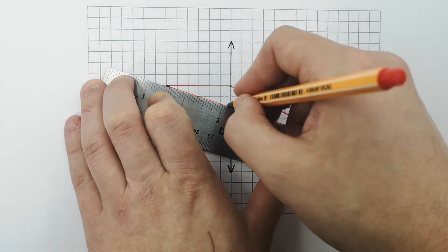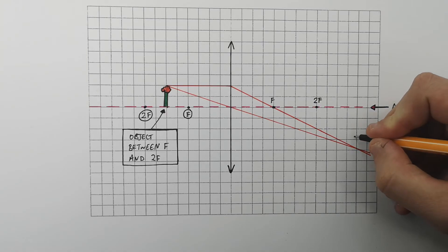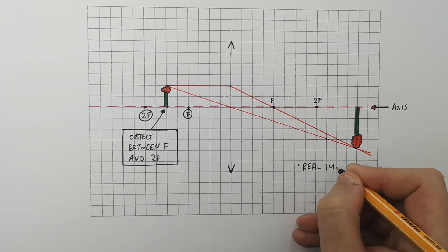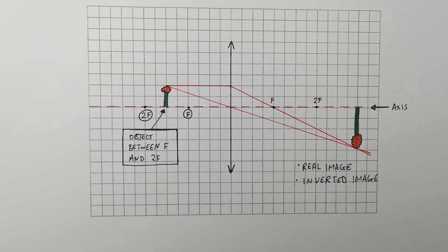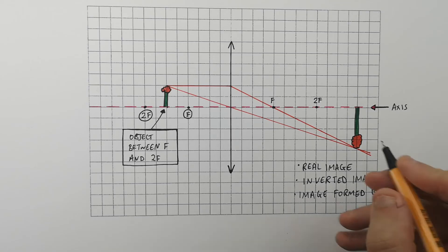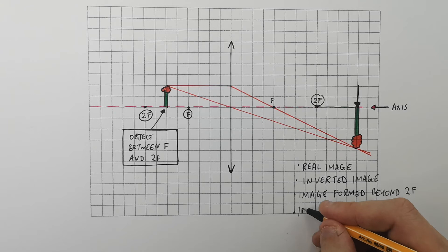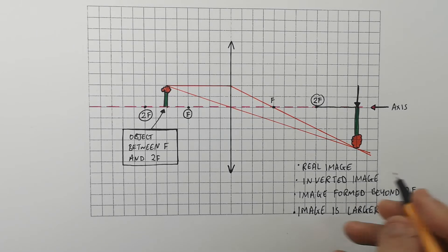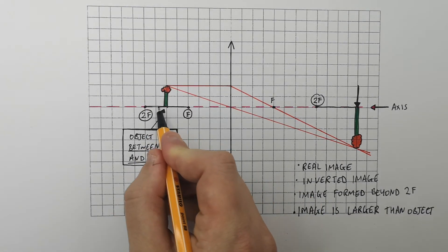This is where the rays meet. The image produced by an object on the axis between f and 2f is a real image — it's a real inverted image. The image is beyond the far side 2f, and the image formed is larger than the object. This is the image formed by an object on the axis between f and 2f.